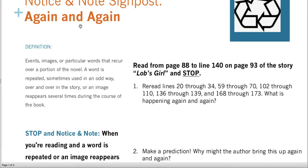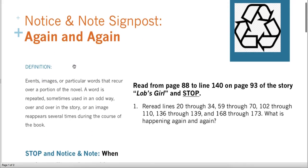In your possession you have a handout that looks like this. It gives you a definition of 'again and again': events, images, or particular words that recur over a portion of the novel. A word is repeated — sometimes used in an odd way — over and over in the story, or an image reappears several times during the course of the book. There's an event in Lob's Girl that happens again and again. We'll make note of those and stop and think about them.